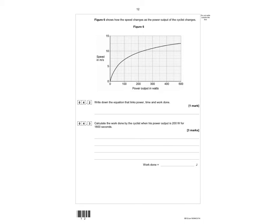For the next bit, figure six shows how the speed changes as the power output of the cyclist changes. So we've got a graph of speed and power. And it's the case now of thinking, what does the graph tell us? You can look at the shape of the graph and realise that it's a curve. So that in itself is significant. It's not a straight line.